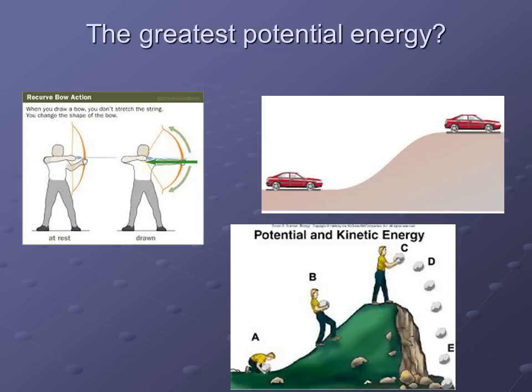For our last one on this slide, the picture is called potential and kinetic energy, and the question is the same: which one has the greatest potential energy? We have points A, B, C, D, and E. The answer is point C. At point C, the rock is as high up as it will ever go — she never has the rock higher than at point C. She's still holding on to it, the rock's not moving yet, so it's stored up energy waiting to be used. That is when the rock is the highest.